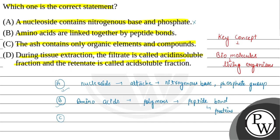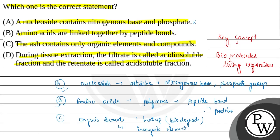Statement C दे रखा है: the ash contains only organic elements and compounds। जो organic elements होते हैं, जब वे heat up होते हैं तो biodegradable हो जाते हैं। जो element बचता है वह inorganic element होता है। तो ash inorganic element होता है — Statement C गलत है।